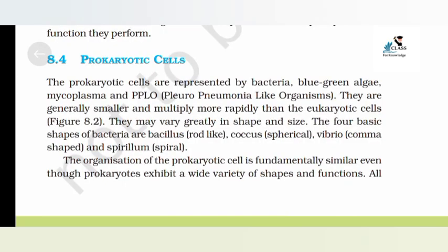8.4 Prokaryotic cells. The prokaryotic cells are represented by bacteria, blue-green algae, mycoplasma, and PPLO (pleuropneumonia-like organism). They are generally smaller and multiply more rapidly than the eukaryotic cells. They may vary greatly in shape and size.